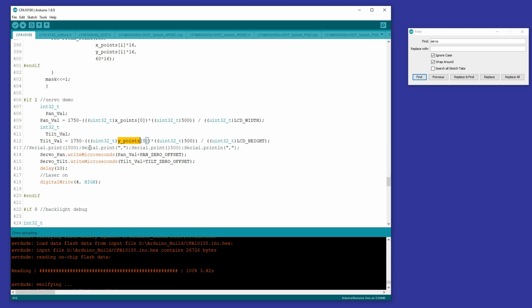So once you've got those two numbers calculated, you simply write those out to write microseconds, the pan value plus that offset, and write microseconds to the tilt plus the offset into the pan and tilt servos.